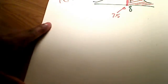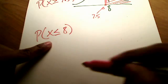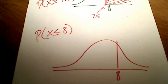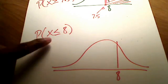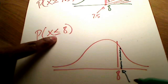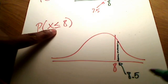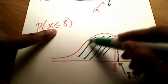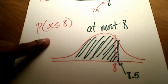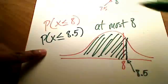How about at most 8? At most 8 also includes 8, but it's shaded to the left. If I want to include 8, then I'm going to go just a little bit above 8, which is 8.5. And at most 8 means I'm going to shade all of the area to the left. That's what continuity correction looks like for at most 8.